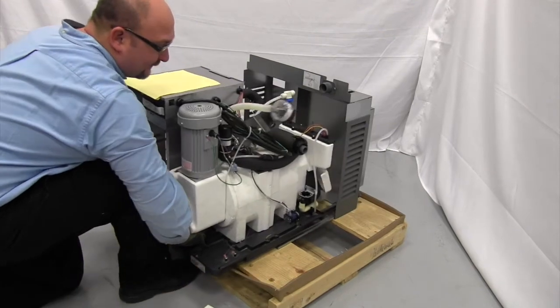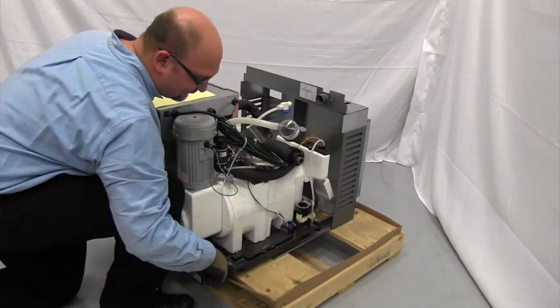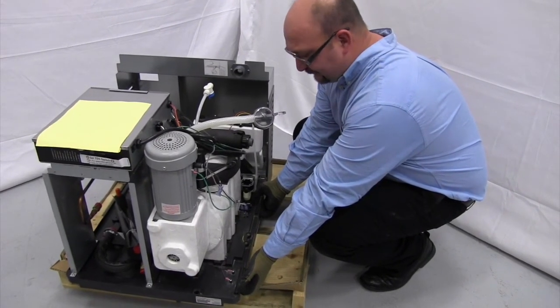Now you're going to pull the ice machine out of the louvered docking station and you're going to expose these two hand holds. With one person on each side, using the hand holds, pick the machine out of the louvered docking station.